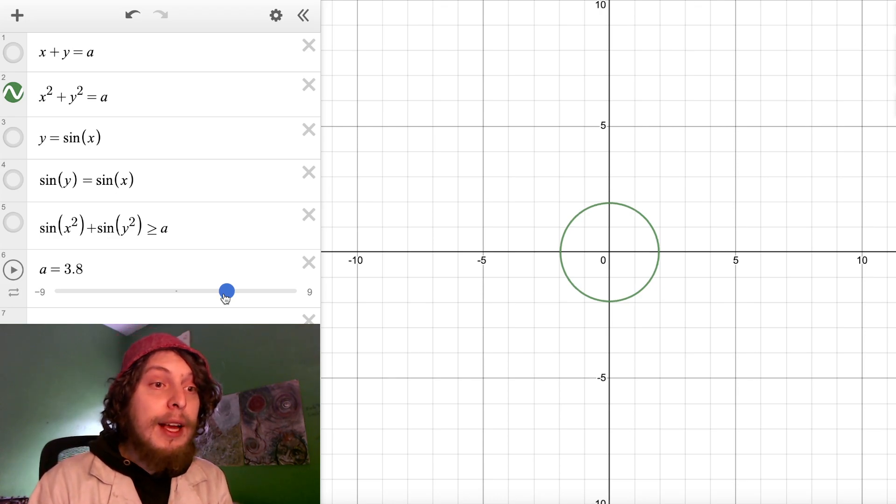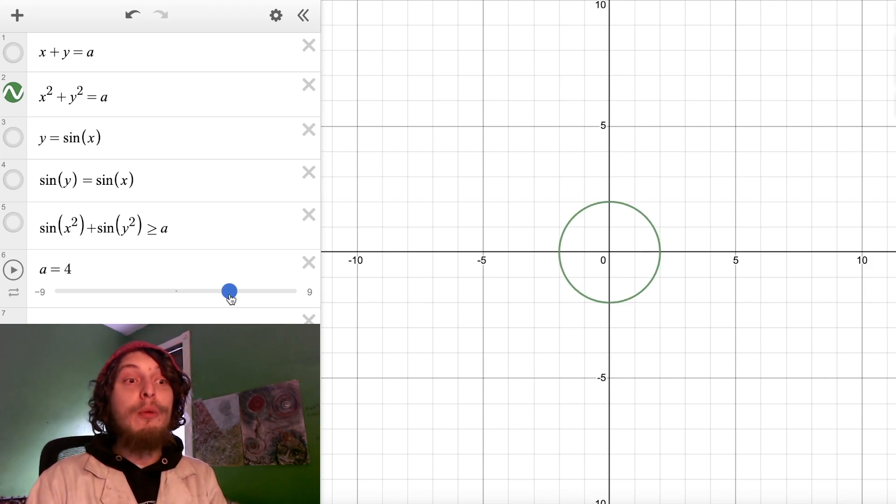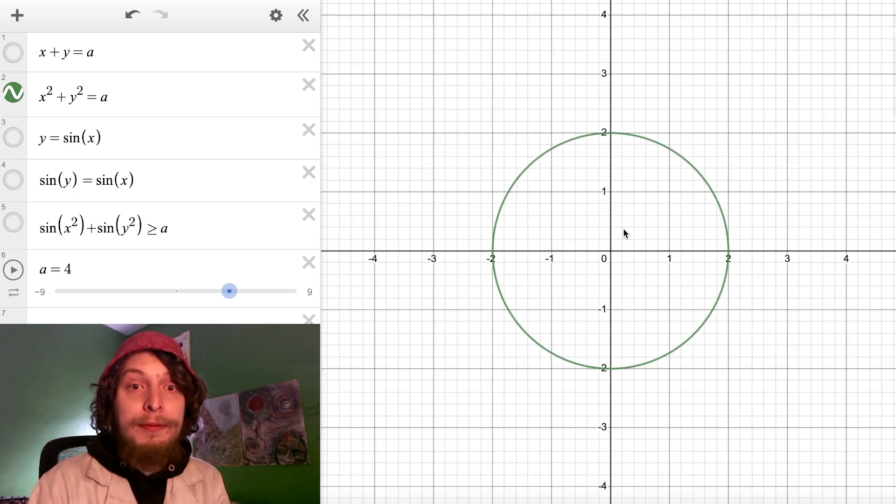Now, if instead of just saying x plus y equals something, I instead say x squared plus y squared equals something, I get a circle. The circle will be centered at the origin, the point with coordinates (0,0), and will have a radius of the square root of A here. For example, if I set this to 4 for A, it shows me all of the points where the square of the x coordinate's value plus the square of the y coordinate's value equals 4, and I get this circle with a radius of 2.